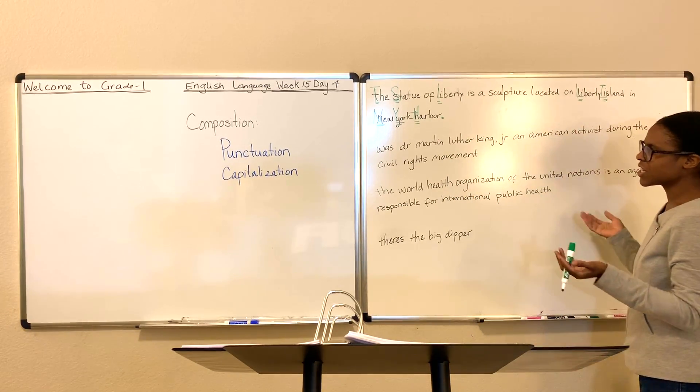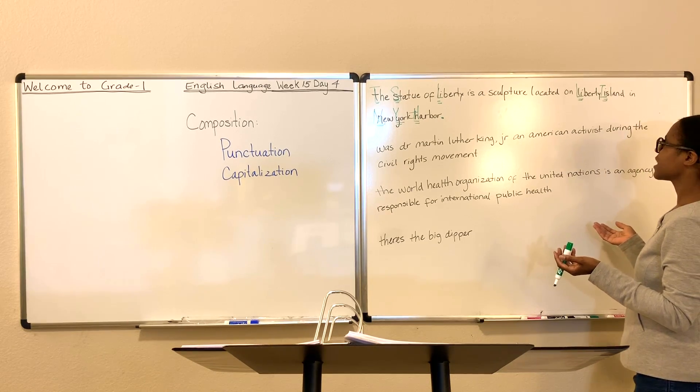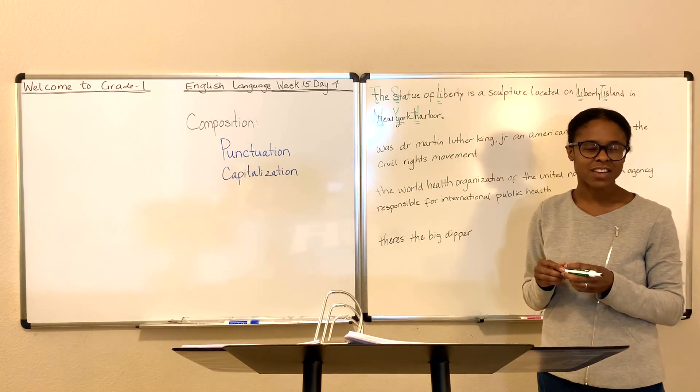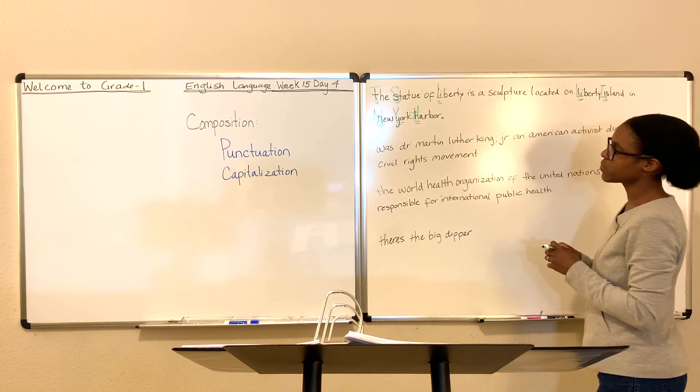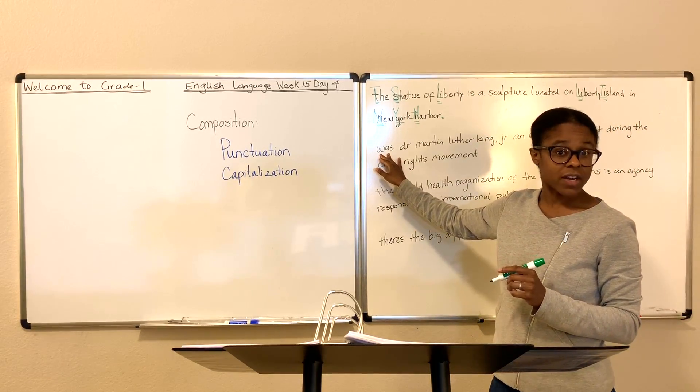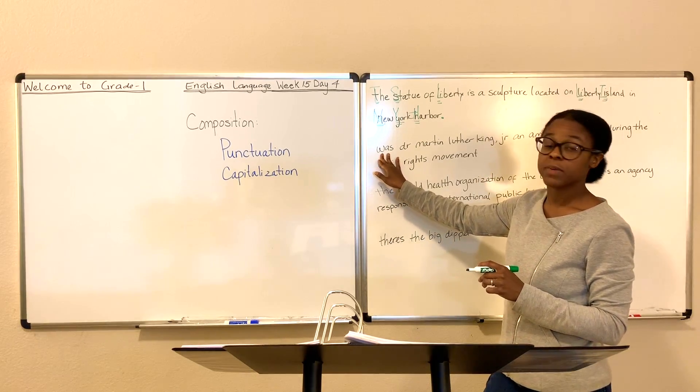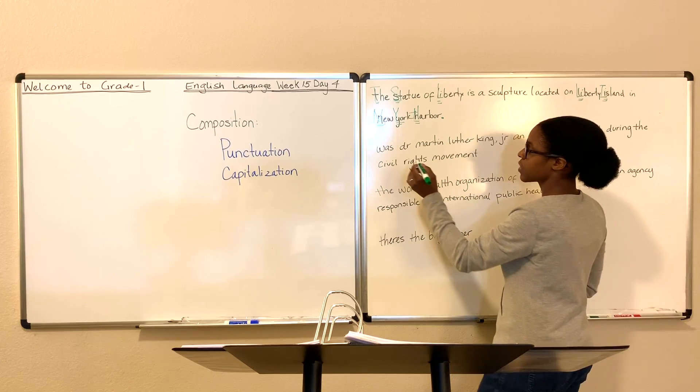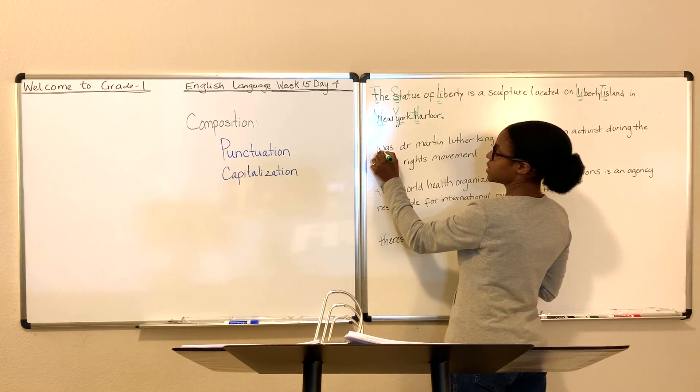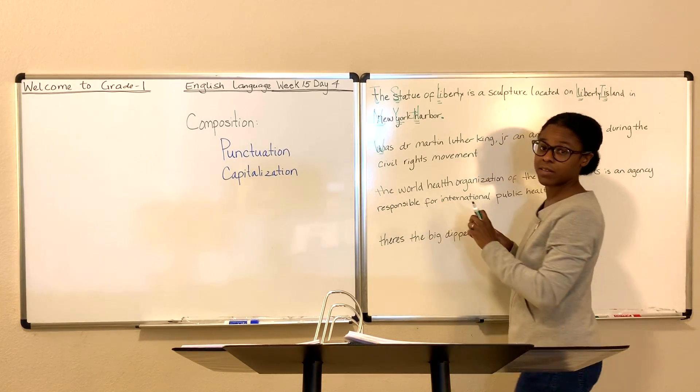Our second sentence says, was Dr. Martin Luther King Jr. an American activist during the civil rights movement? Was he an American activist during the civil rights movement? Well, this is what we call an interruptive statement because it asks a question. Let's begin just finding any errors that need to be corrected. The W in was, what do we need to do with that? We need to uppercase that.